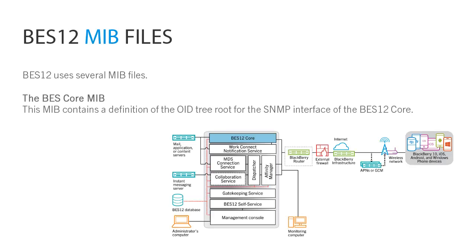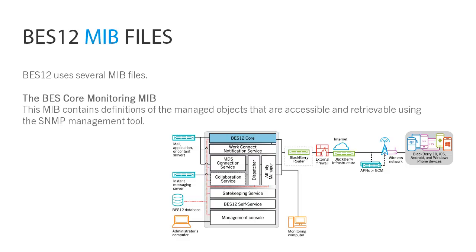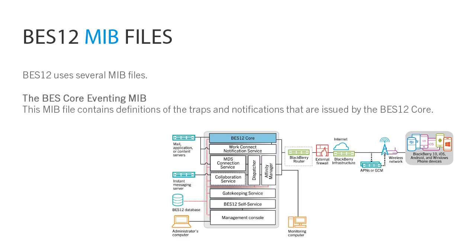The BES-Core MIB contains a definition of the OID tree root for the SNMP interface of the BES-12 core. The BES-Core Monitoring MIB contains definitions of the managed objects that are accessible and retrievable using the SNMP management tool. The BES-Core Eventing MIB file contains definitions of the traps and notifications that are issued by the BES-12 core.